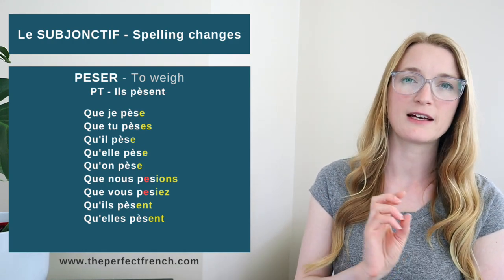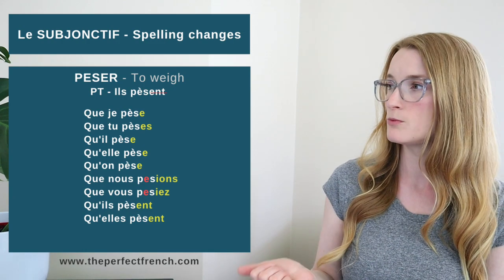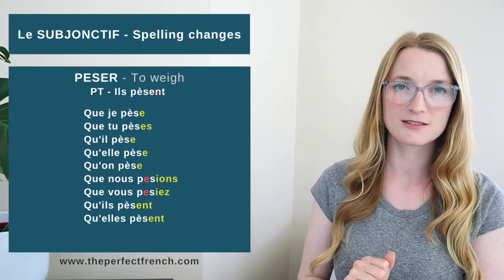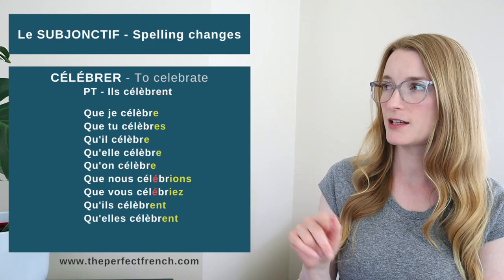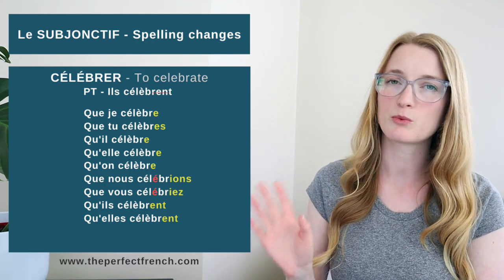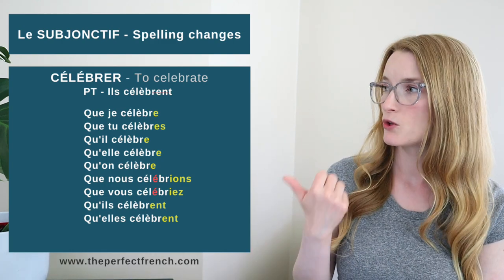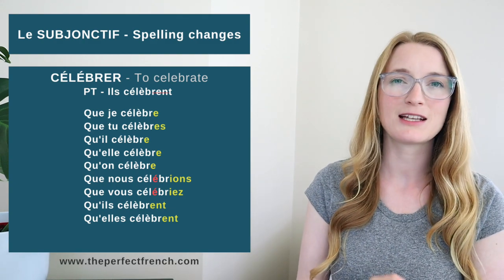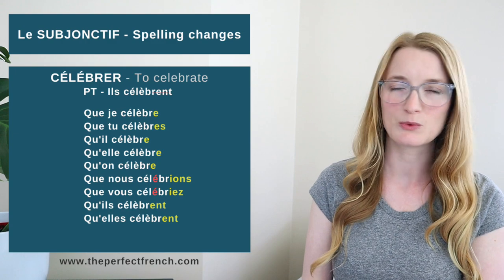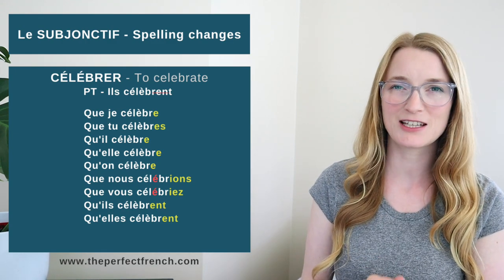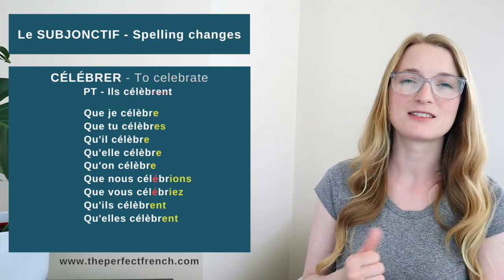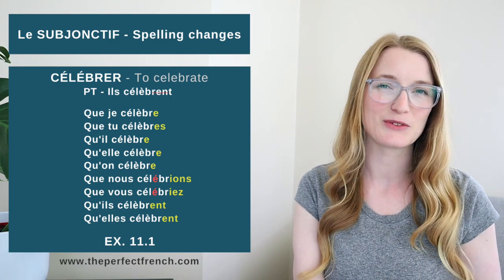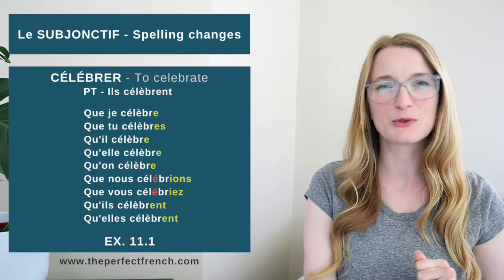So: que je pèse, que tu pèses, qu'il pèse, que nous pesions, que vous pesiez, qu'il pèse, qu'elle pèse. Célébrer: ils célèbrent — we remove the -ent. So: que je célèbre, que tu célèbres, que nous célébrions, que vous célébriez, qu'il célèbre, qu'elle célèbre. You can practice with the first exercise of the subjonctif, 11.1.